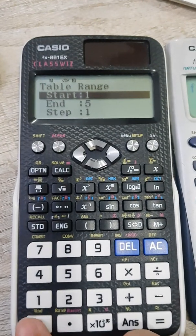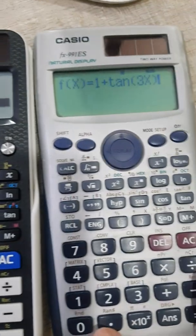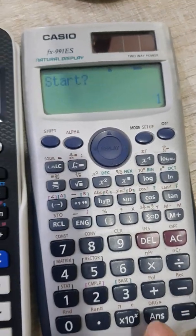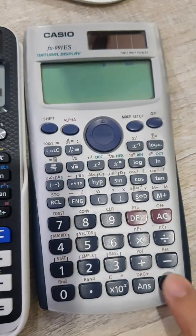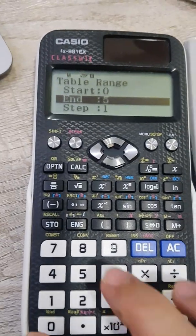But for now, we can see that the starting value is 0, so I'll write 0 here, press equals to and then we're going to do the same here also. Once you press equals to, it's asking you for the starting value, so you write 0, press equals to and then the ending value.